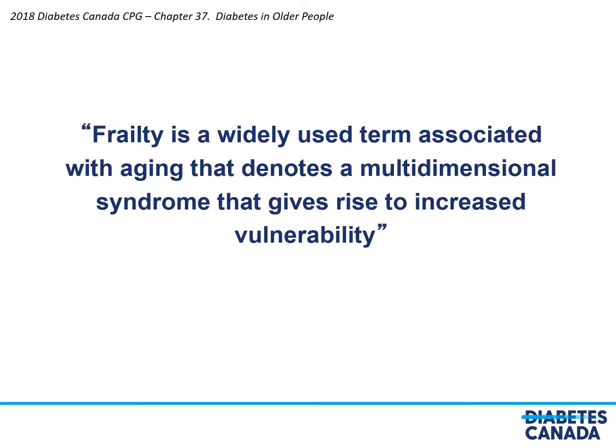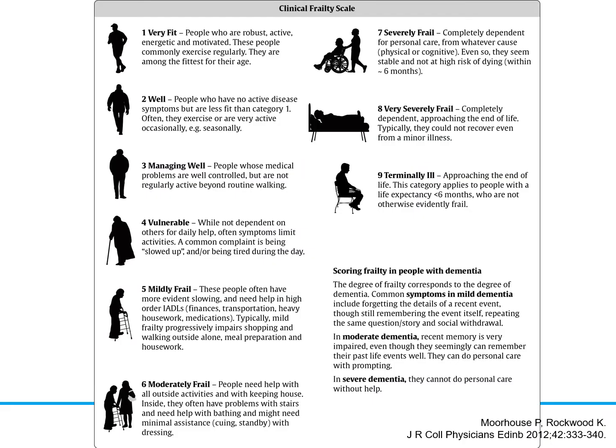Frailty is a widely used term associated with aging that denotes a multi-dimensional syndrome that gives rise to increased vulnerability. This figure shows a clinical frailty scale developed by Ken Rockwood and his colleagues in Halifax. It's important to understand this scale because the frailty index will be used to determine how our glycemic targets are set — where a person falls on this scale will predicate the parameters used for controlling blood sugar, blood pressure, and lipids.